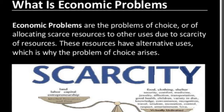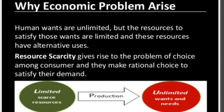Why does this problem of scarcity arise? Because the disposal of the resources is very limited in nature. The natural resources in our economy are very limited. So there comes the problem of choice — allocating scarce resources to other uses. Due to this scarcity, we have to choose among these resources which can satisfy the urgent needs. All these resources have alternative uses, and that's why this problem of choice arises. The needs or demands of consumers are unlimited, while commodities are limited, creating a mismatch of needs and wants.